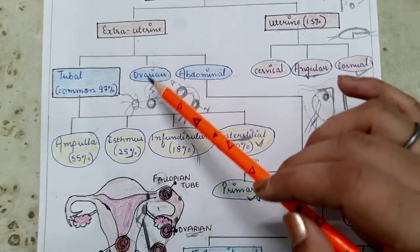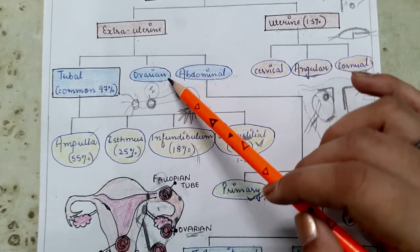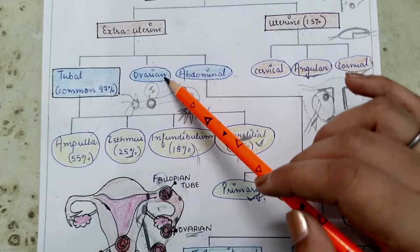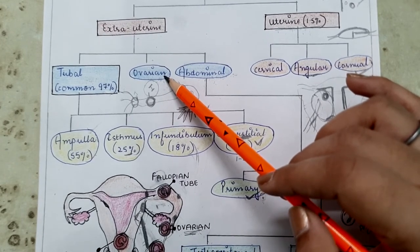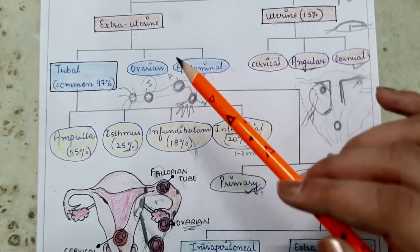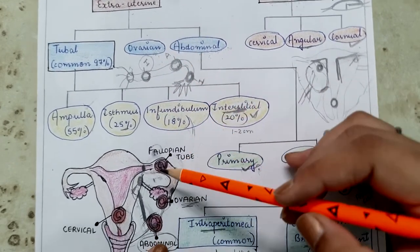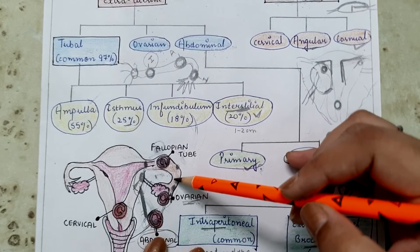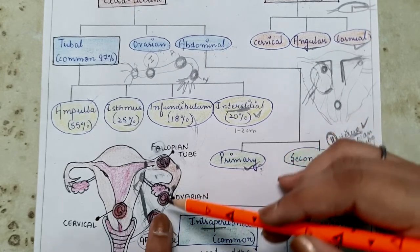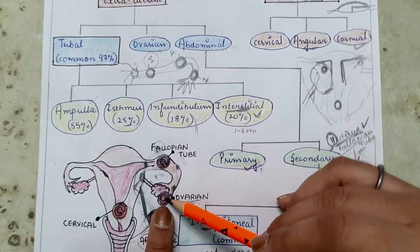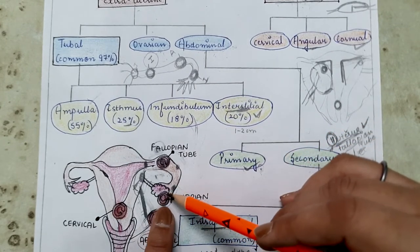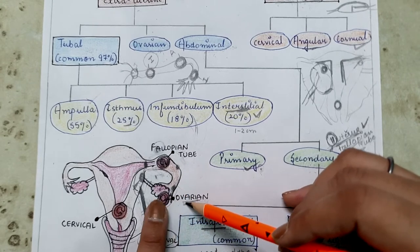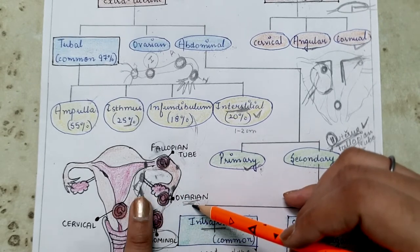The second type under extra-uterine pregnancy is ovarian pregnancy, where the fertilized ovum implants inside the ovary itself.